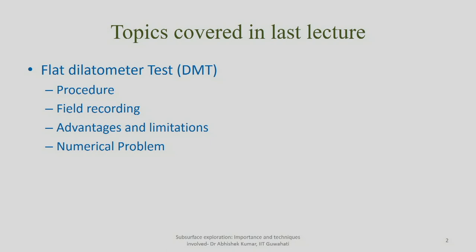Last class we discussed the flat dilatometer test — the procedure, typical field records obtained when you lower the dilatometer at different depths, bringing the membrane in contact with the blade, measuring pressure P0, then pushing the center of the membrane by 1.1 mm towards the soil (that is P1), applying corrections for membrane stiffness and water table effects to get corrected P0 and P1 values, from which different soil properties can be determined.